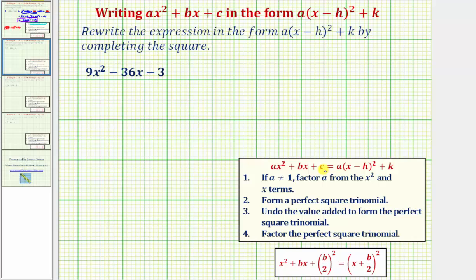So going from this form on the left, ax² + bx + c, to the form on the right, or the form a times the quantity x minus h squared plus k.